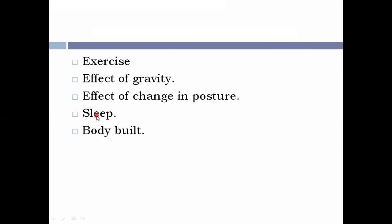The next is sleep. A peaceful sleep leads to a fall in blood pressure by around 15 to 20 mmHg. But during very disturbed sleep, blood pressure will be increased because of increased sympathetic activity. The next is body build — an obese person usually has higher blood pressure than a thin or lean person.